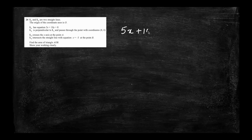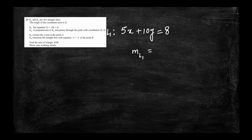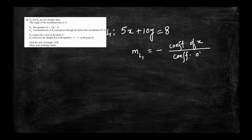We are given the equation of line L1 which is 5x plus 10y equals 8. From this we can find the gradient of the line. The gradient of L1 can be found by dividing the negative coefficient of x by the coefficient of y. That is negative 5 over 10, which equals negative 1 over 2.